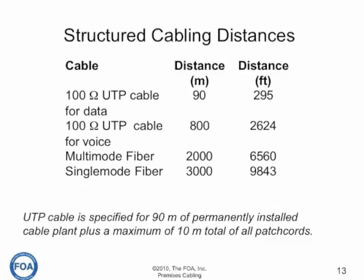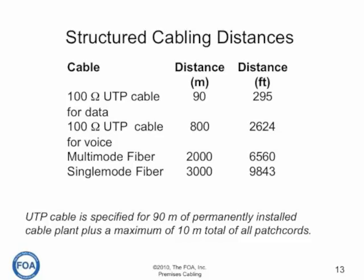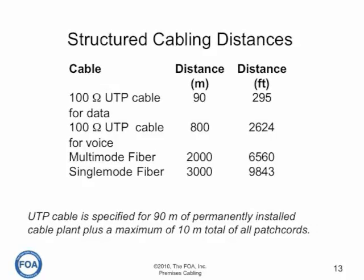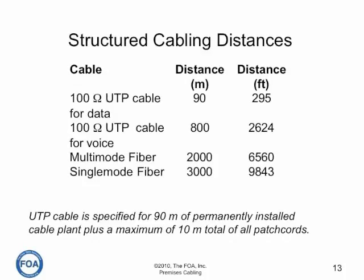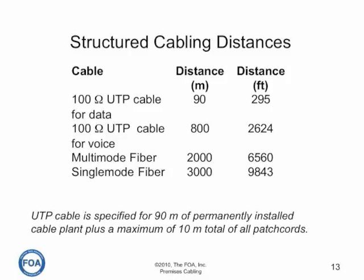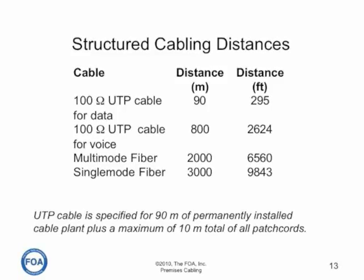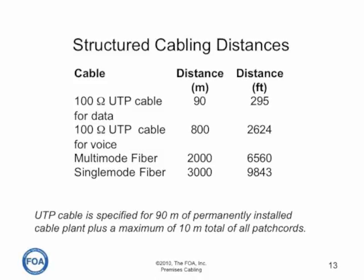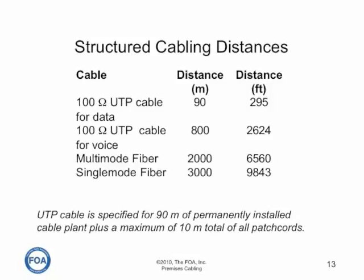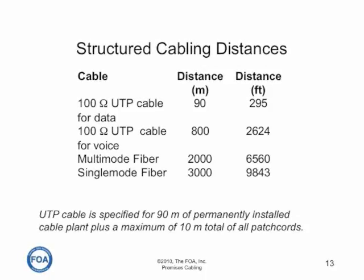The distances for structured cabling are somewhat misunderstood. The distance for horizontal cabling is 90 meters of permanently installed cable plant, plus 10 meters of patch cords, for 100 meters total distance. But if you're using unshielded twisted pair cable for voice, you can go 800 meters. In backbones, multi-mode fiber can go 2,000 meters — two kilometers — or three kilometers for single mode. For various types of networks operating on structured cabling, the networks limit the distance for fiber to much shorter distances when you get up to gigabit, 10 gigabit, and faster networks. Always refer to the network information for the standards on the length of cable supported.